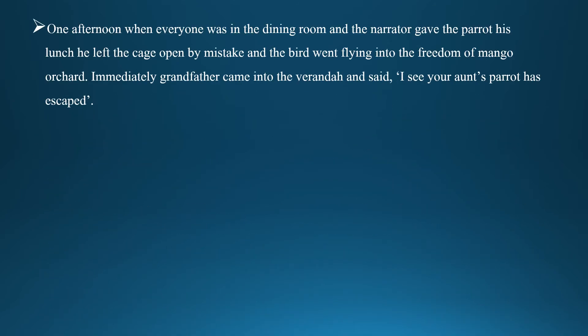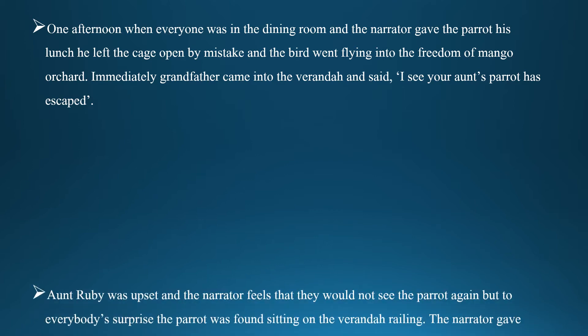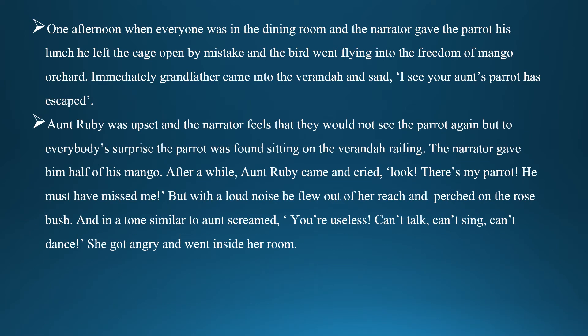One afternoon when everyone was in the dining room and the narrator gave the parrot his lunch, he left the cage open by mistake and the bird went flying into the freedom of the mango orchard. Immediately, Grandfather came into the veranda and said, 'I see your aunt's parrot has escaped.' Aunt Ruby was upset and the narrator feels that they would not see the parrot again. But, to everybody's surprise, the parrot was found sitting on the veranda railing.